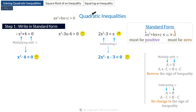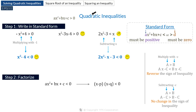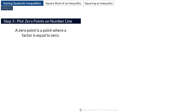After writing the inequality in standard form, we move to the next step: factorize the quadratic expression on the left-hand side. From ax squared plus bx plus c less than 0, we get something like (x minus p)(x minus q) less than 0. A zero point is where a factor equals 0. So the zero points of (x minus p)(x minus q) are p and q, found by setting each factor equal to zero.